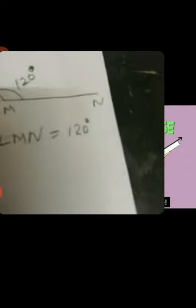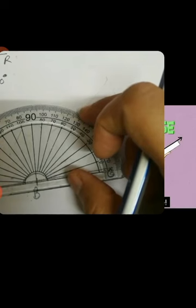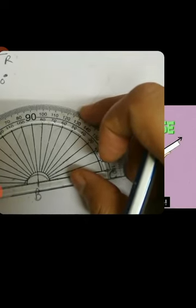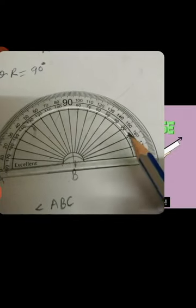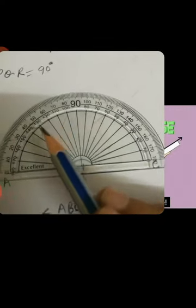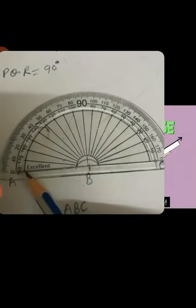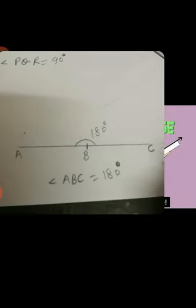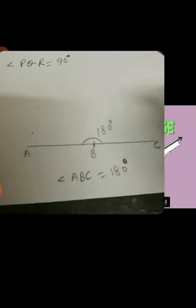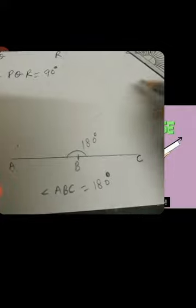Now see one more example. Here is a straight line. Keep the center point on the center line and the bottom line should touch the line. It starts from 0, moving through 10, 20, 30, and so on — 100, 120, 160, 170, 180. It reached till 180, so it is a straight line, a 180 degree angle. So angle A, B, C is equal to 180 degree, a straight angle. And if there is a circle, around a circle we know there is formation of a complete angle, so that is 360 degree.